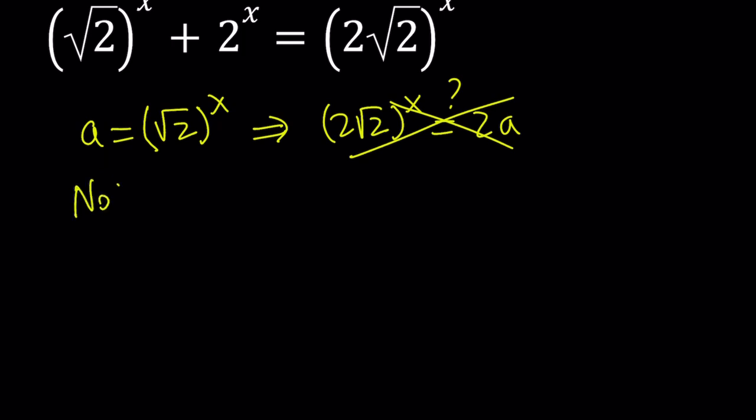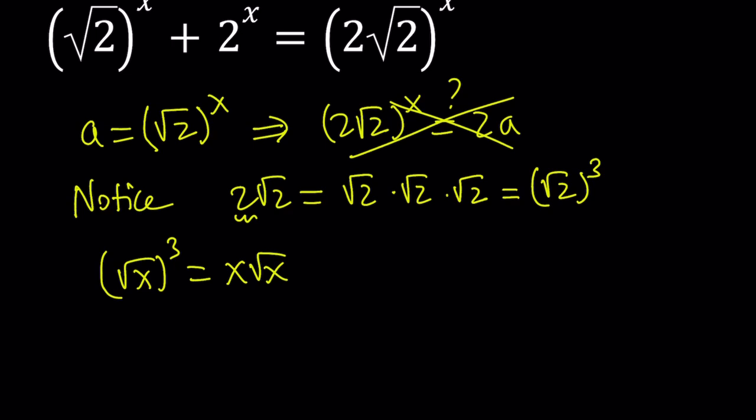So I want you to notice that 2 times the square root of 2 can be written as square root of 2 times the square root of 2, because 2 can be broken down, times the square root of 2. So we have the square root of 2 or root 2 three times. So that means root 2 to the third power equals 2 root 2. And this is a general rule, like if you cube square root of x, you get x times the square root of x.